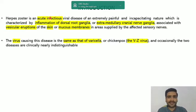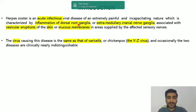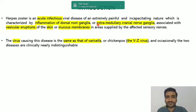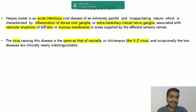Herpes zoster is an acute infectious viral disease of extremely painful and incapacitating nature. Two main things happen: firstly, there will be inflammation of dorsal root ganglia, also called extra-medullary cranial ganglia - any cranial ganglia whose course is outside the medulla can get inflamed due to this virus. This leads to vesicular eruptions on skin and mucous membrane in the areas supplied by those affected sensory nerves.